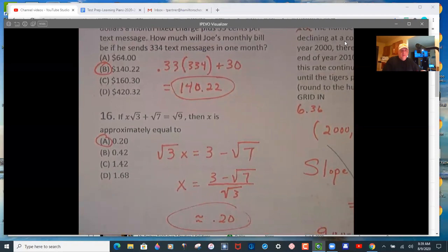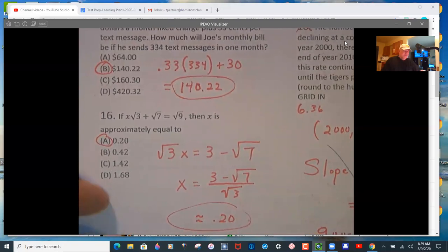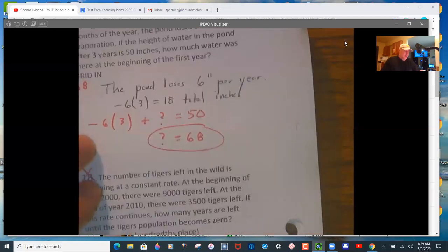So subtract the square root of 7, divide by the square root of 3. And you have it. Problem 17.